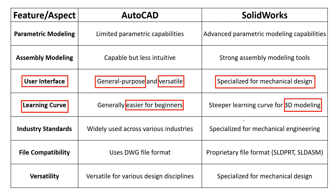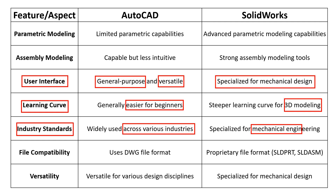Industry Standards: AutoCAD is widely used across various industries including architecture, civil engineering, and mechanical design. It is a versatile tool that can handle different types of design projects. SolidWorks is specifically focused on mechanical design and is extensively used in industries such as manufacturing, automotive, aerospace, and consumer products.